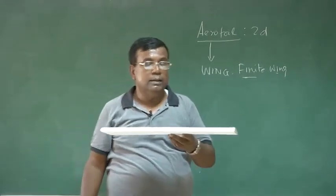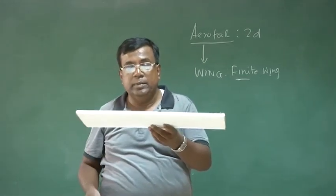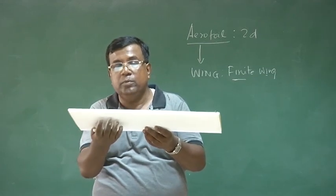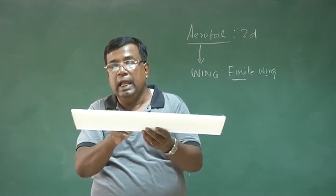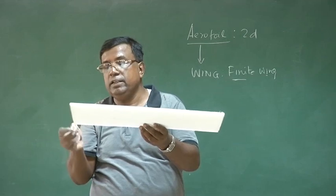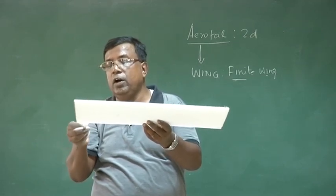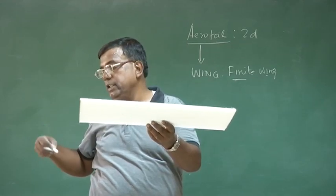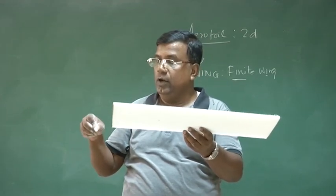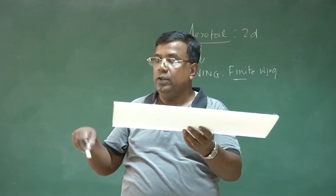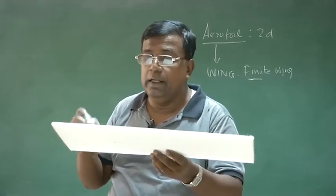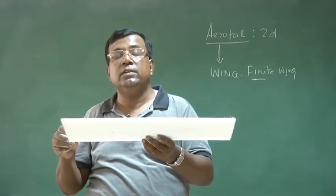For an aerofoil the span is infinite, so no cross flow is allowed — all flow is along the chord. Now, when there is a finite wing, this is not infinite. If it is flying at an angle, the pressure below is more than the pressure on top — that is why there is lift. As we come near the tip of the wing, air will try to come from the bottom to the top, forming a vortex. Since this goes into rotational motion, rotational kinetic energy is required, and that comes at the cost of the energy of the airplane.